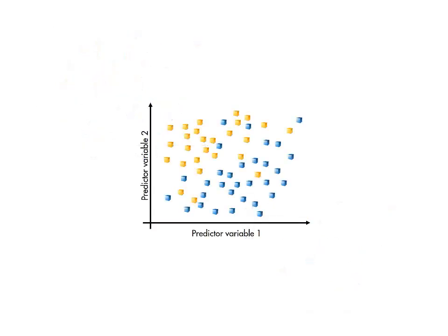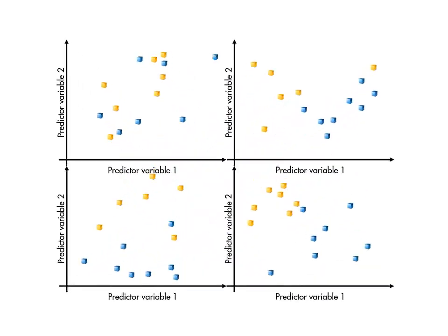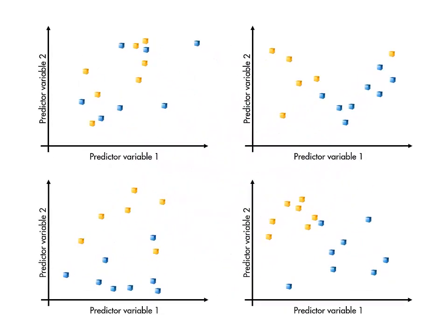To avoid this, you can perform cross-validation. In k-fold cross-validation, the data is randomly divided up into k sets, known as folds.